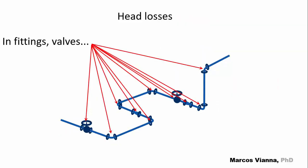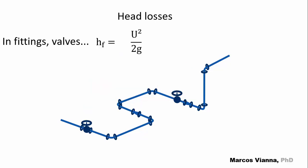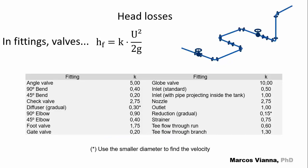Head losses also occur in fittings, valves, and so on. We call them minor losses. As in the case of pipes, these head losses are proportional to the kinetic energy. A K appears in the expression. We find the values for it in tables like this.